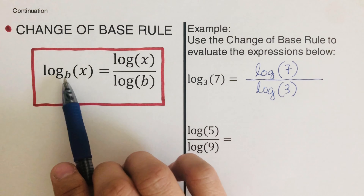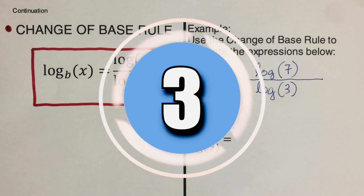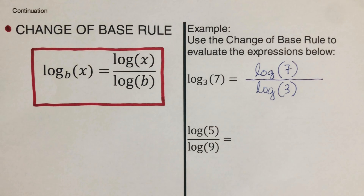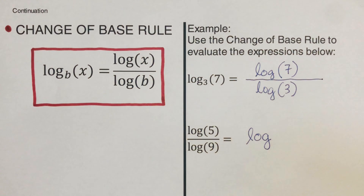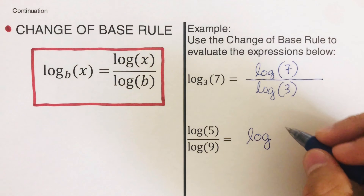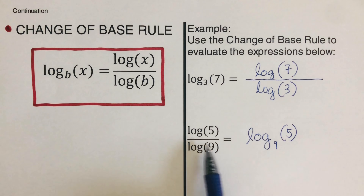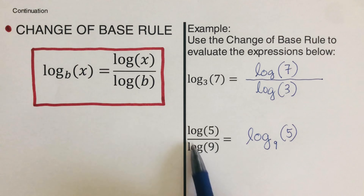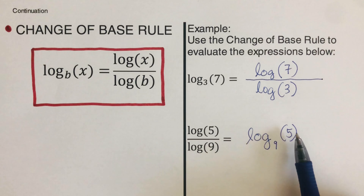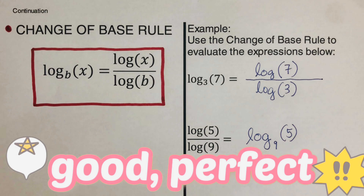Now try doing it backwards: given log of 5 over log of 9, we can simplify this into one logarithmic expression. That would be log of 5 to the base 9. These two expressions can go back and forth — they are equivalent forms.